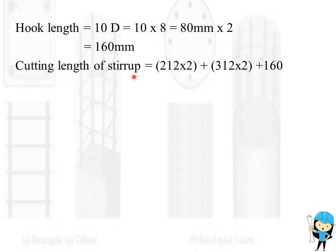Cutting length of the stirrup is equal to 212 x 2 plus 312 x 2 plus 160, which is equal to 1208 mm, that is 1.2 meter.